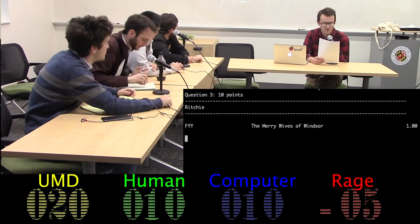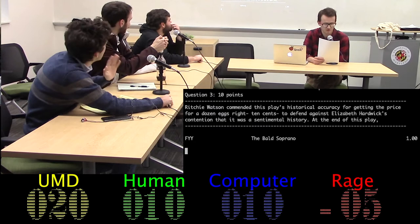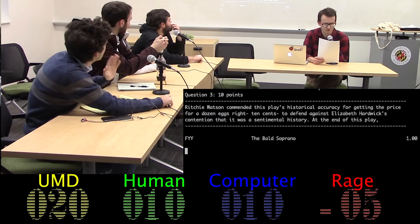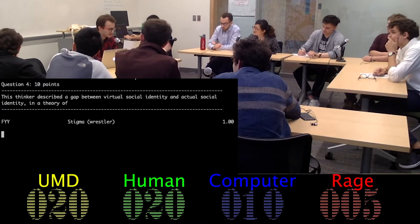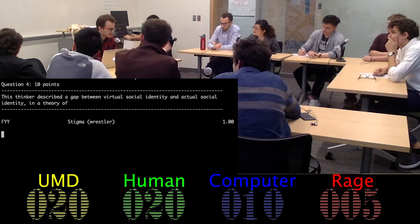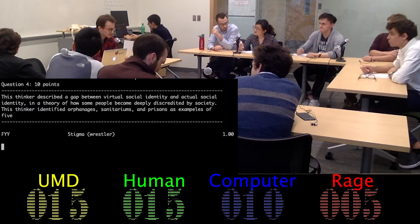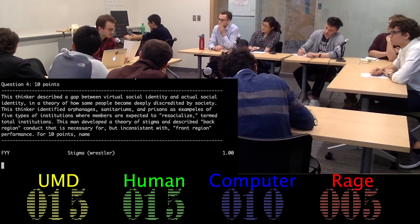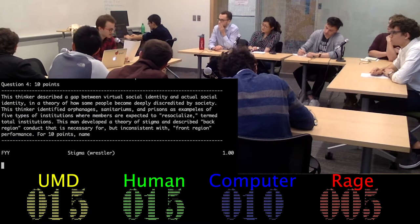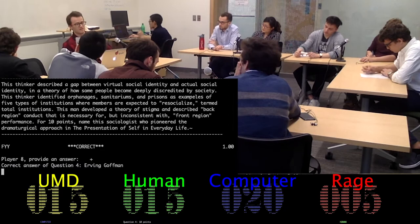Toss-up three. Richie Watson commended this play's historical accuracy for getting the price for a dozen eggs right, 10 cents, to defend against Elizabeth Hardwick's contention that it was a sentimental history. At the end of this play, a man wonders why a wheelchair is at the top of a staircase. Ten points. Toss-up four. This thinker described a gap between virtual social identity and actual social identity in a theory of how some people become deeply discredited by society. This thinker identified... Merchant. No, neg five. This thinker identified orphanages, sanitariums, and prisons as examples of five types of institutions where members are expected to re-socialize, termed total institutions. This man developed a theory of stigma and described back-region conduct that is necessary for, but inconsistent with, front-region performance. For ten points, name the sociologist who pioneered the dramaturgical approach in the presentation of self in everyday life. Ten points.